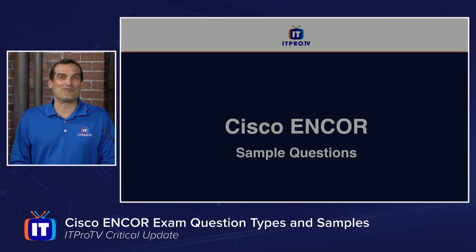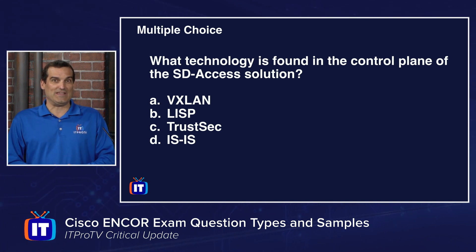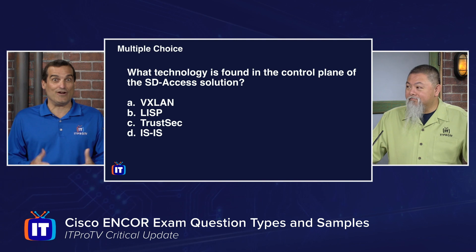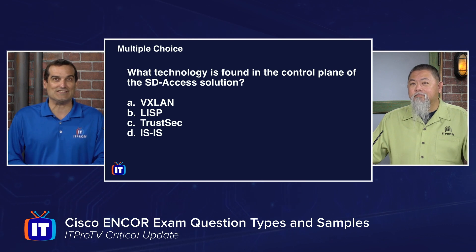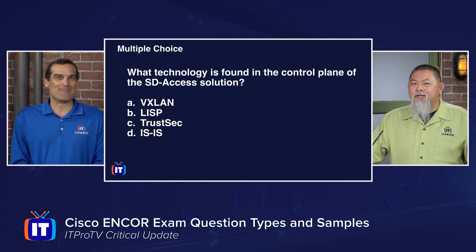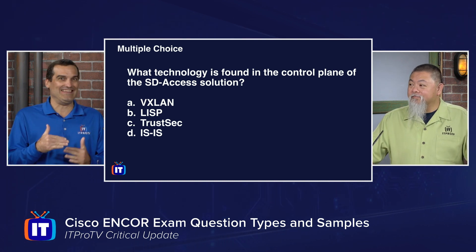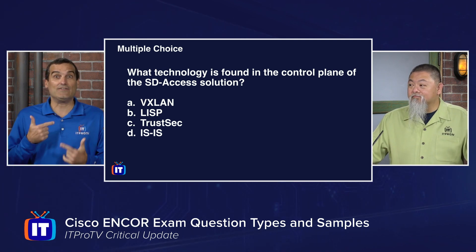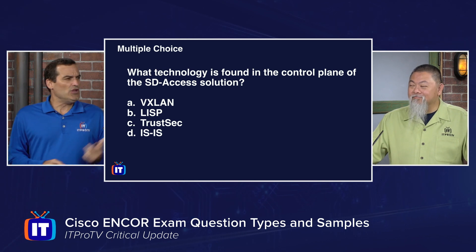Much like the CCNA, the primary question type that students can expect is the classic multiple choice. For this first sample: what technology is found in the control plane of the SD Access solution? Ronnie quickly narrowed it down — TrustSec no, IS-IS no — and got it down to two options. For the control plane it is LISP, so the answer is B. VXLAN would be the data plane.